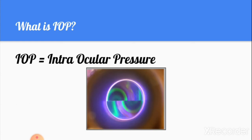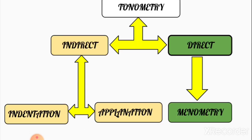IOP stands for intraocular pressure. The image shown here is an IOP reading taken by applanation tonometry. We can see two mires (semi-circles) formed when the probe is pressing the cornea — this will be discussed in later slides.